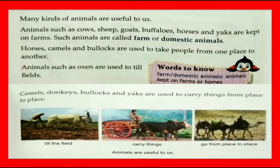Let's start this chapter. Many kinds of animals are useful to us. Animals such as cows, sheep, goats, buffaloes, horses, and yaks are kept on farms. Such animals are called farm or domestic animals. Horses, camels, and bullocks are used to take people from one place to another. Animals such as oxen are used to till fields.